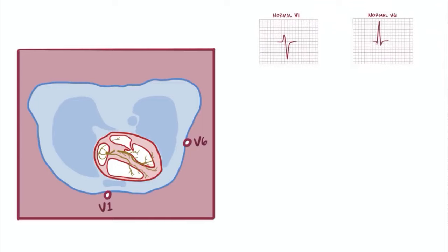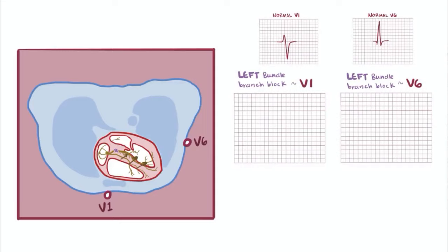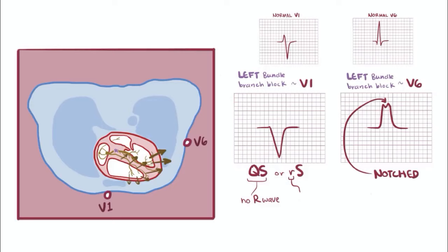Now let's say that there's a block along the left bundle branch, so now the overall direction of depolarization comes from the right side and moves toward the left, so away from V1 and toward V6, meaning negative in V1 and positive in V6. V6 will also often be notched from the left ventricle depolarizing late. So when it's all said and done, V1 usually has a QS or a little rS complex, QS meaning an absent R wave and little rS meaning a small R wave, either of which give it a W shape. On V6, the large notched R wave gives it an M shape.